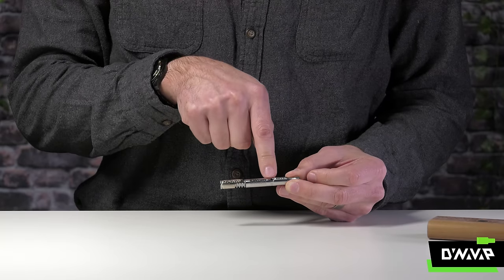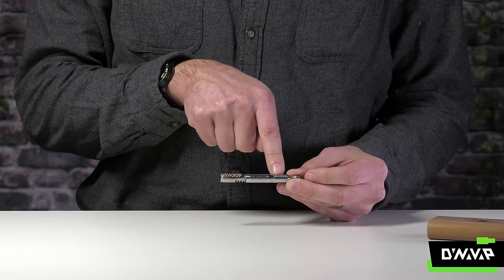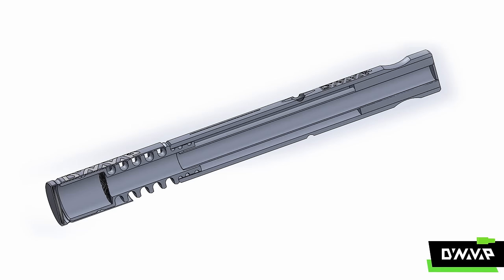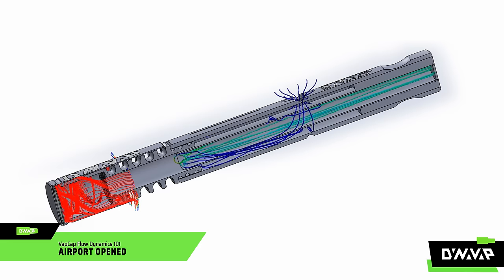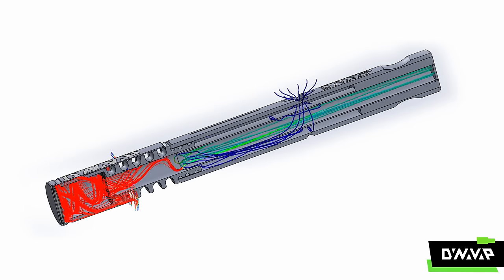That air enters here and travels away from the mouthpiece towards the tip, where it introduces a significant amount of turbulence as it picks up vapor. That vapor is displaced by the small amount of air traveling underneath the cap on the outside of the tip and then through the material in the extraction chamber.